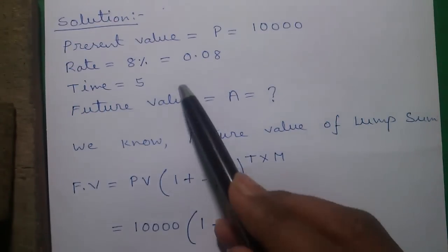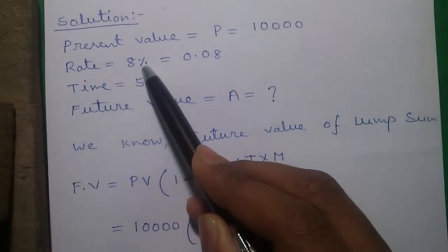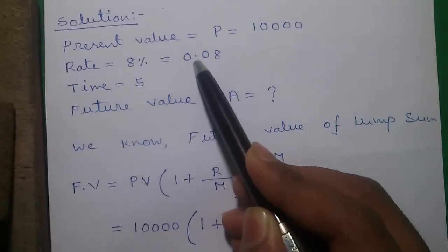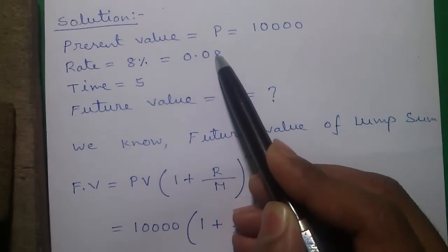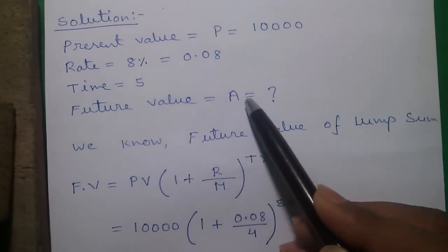So according to the question, the present value is 10,000 and rate is 8% or 8 divided by 100 or 0.08, and time is 5 years, and the future value we have to calculate.